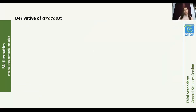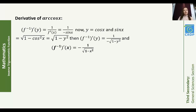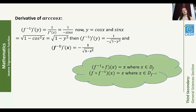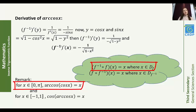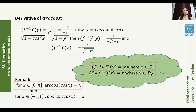Derivative of arc cosine x. Using f⁻¹'(y) = 1/f'(x) = 1/(−sin(x)), with y = cos(x) and x ∈ [0, π], sin(x) is positive and equals √(1 − cos²x) = √(1 − y²). Then f⁻¹'(y) = −1/√(1 − y²), and the derivative of arc cosine x is −1/√(1 − x²). Remark: for x ∈ [0, π], arc cosine(cos(x)) = x, and for x ∈ [−1, 1], cosine(arc cosine(x)) = x.